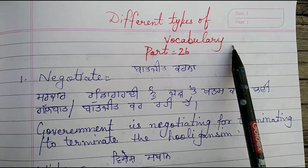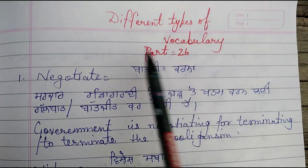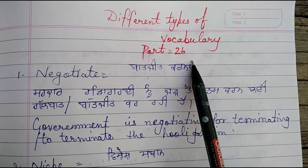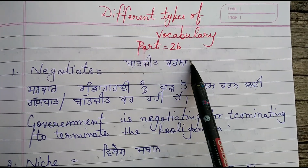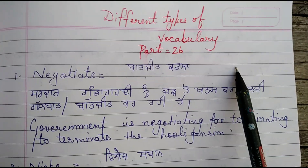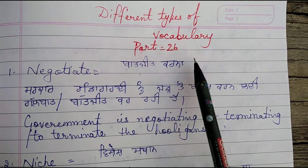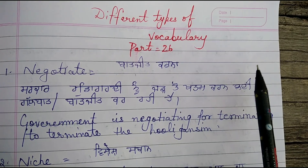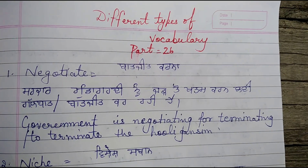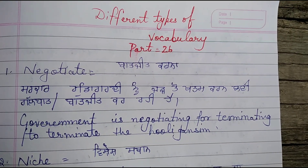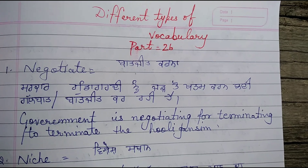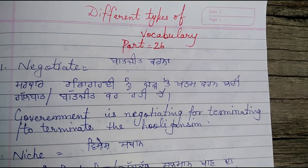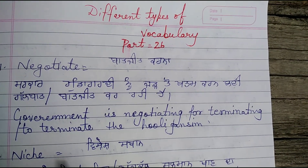Today I am going to teach you different types of vocabulary. This is part 26. In this video we will see 10 words with examples. Make sure you watch this video till the end. In the last 25 videos, the words described are mostly used in newspapers these days. If you have not watched those videos, please visit my channel English for Beginners and watch those videos.